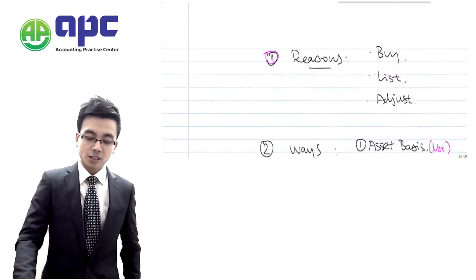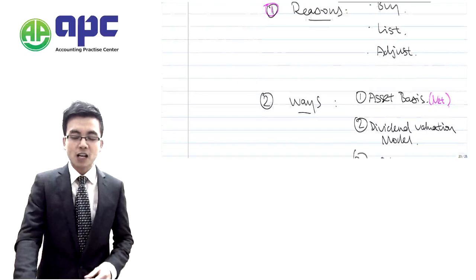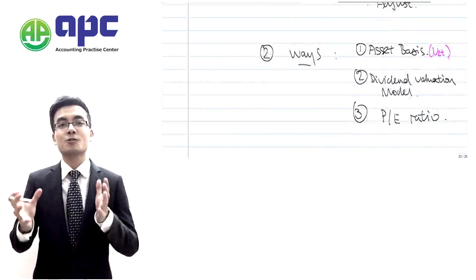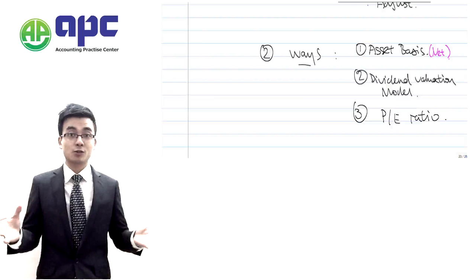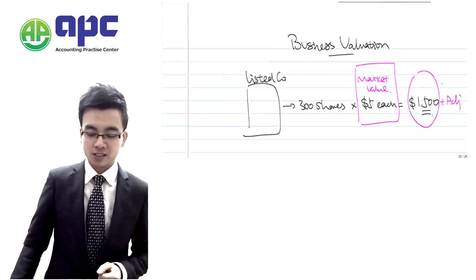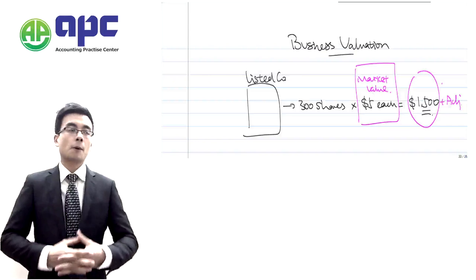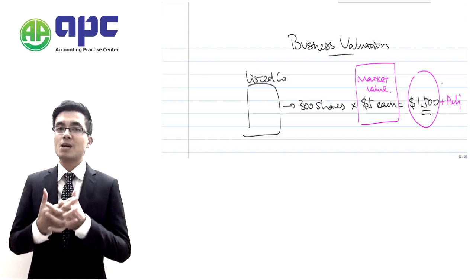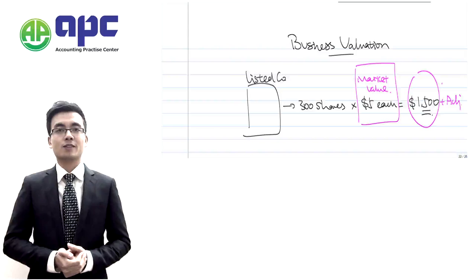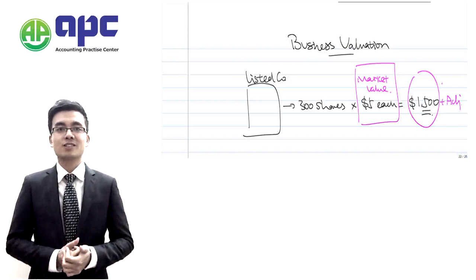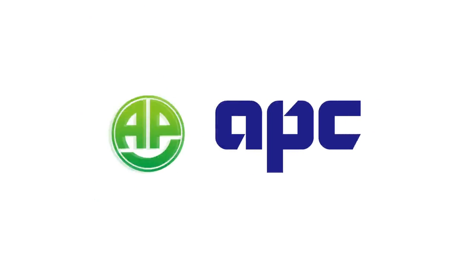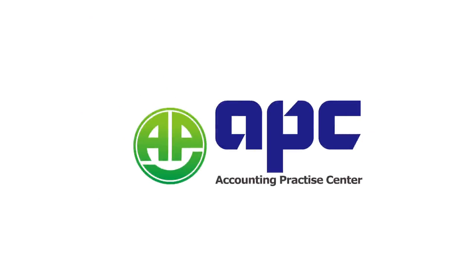Those are the three ways to value a business. In later papers there will be many more valuation methods beyond these three, but this serves as an introduction to business valuation. To recap: why do we value a business? Maybe we're going to buy another company, or we need to adjust information currently in the marketplace. Thank you — APC accounting for your future.